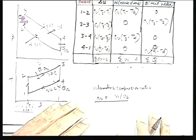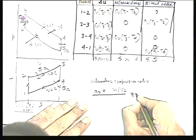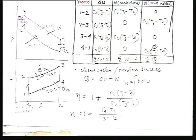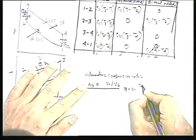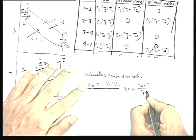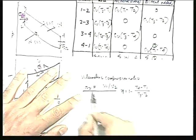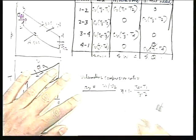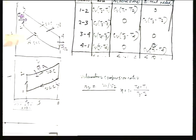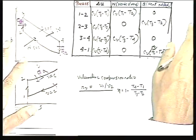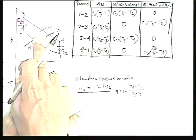Our job is to express the efficiency in terms of the volumetric compression ratio, which is a very important parameter for the Otto cycle from a practical standpoint. This is a theoretical cycle for the internal combustion spark ignition engine. Many people can solve the Otto cycle problem but cannot explain why the volumetric compression ratio matters. It is the key design parameter because the engine must be designed within a fixed, limited space — space is the criterion.